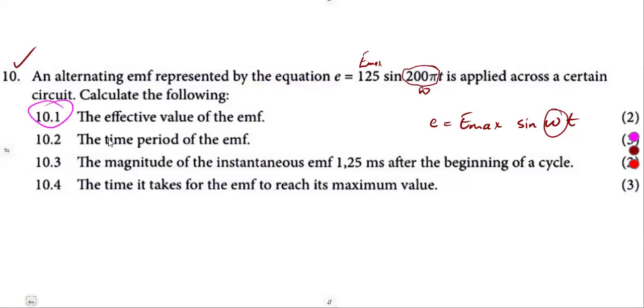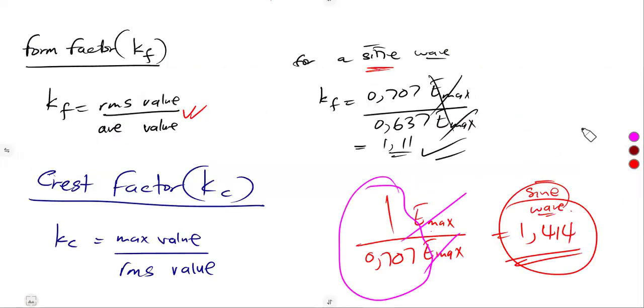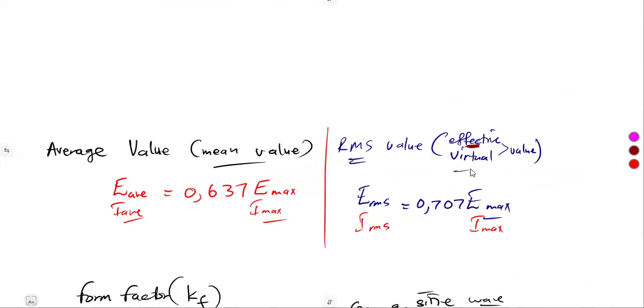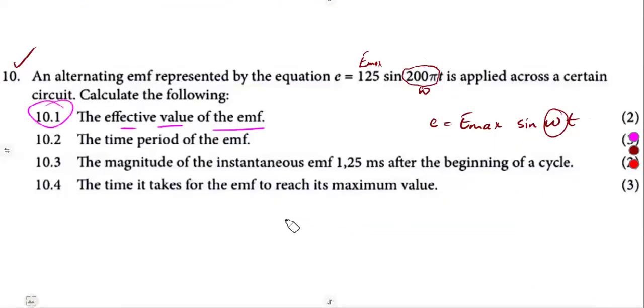The question was to calculate the effective value of the EMF. Remember, the effective value is the RMS value. As we had in our notes before, the RMS value is our effective or virtual value. So they want you to calculate the RMS value. We have the maximum value, so our RMS can be determined from this: 0.707 of the maximum value. So that was simply a substitution to be done.